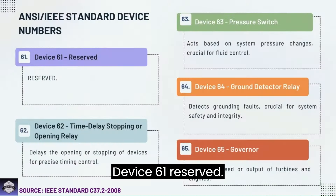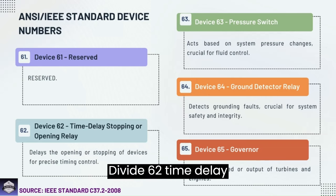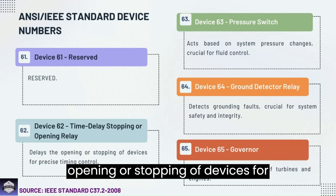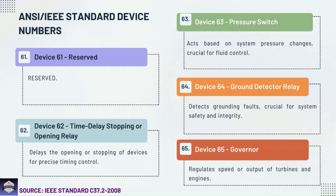Device 61: Reserved. Device 62: Time delay stopping or operating relay — delays the opening or stopping of devices for precise timing control.